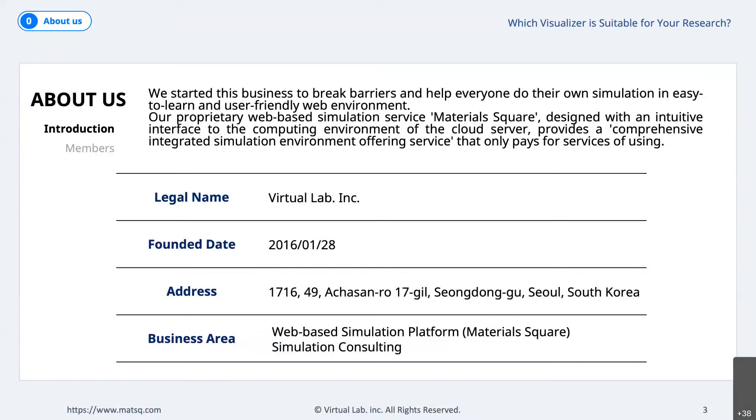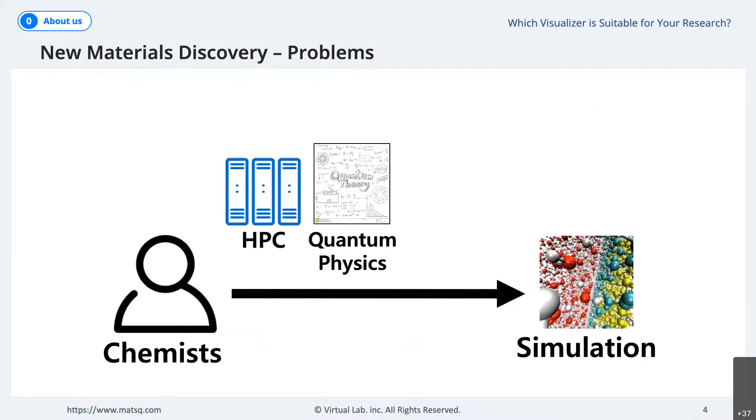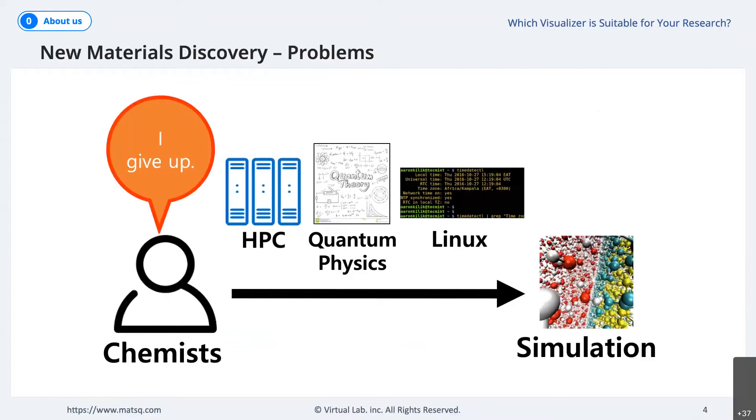Material simulation for everyone is our aim. As you can see, there is a problem. There are many chemists who want to use simulation using supercomputing. However, it is not currently feasible because you need to learn HPC, quantum physics, and Linux in order to conduct simulation today. So they just give up. This is a big loss.